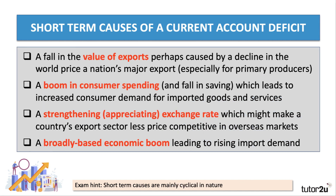Let's go back to the short-term causes, which are mainly cyclical in nature. For example, it could well be the case that there's a fall in the value of an export, particularly if it's a major export. Think about countries heavily dependent on primary products such as oil and gas, copper, zinc, tea, coffee etc. If there's a fall in the world price of your major export — in other words a decline in the terms of trade — that's likely to worsen your current account. A second cyclical cause is a boom in consumer spending, a rapid increase in spending, a fall in saving which drives up the demand for imported goods and services.